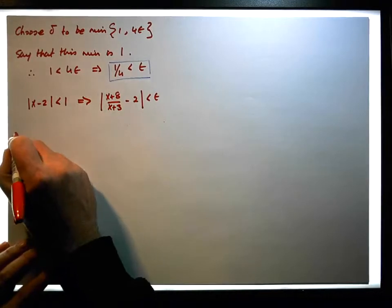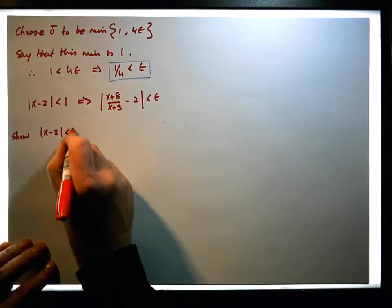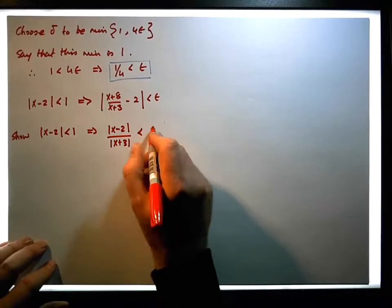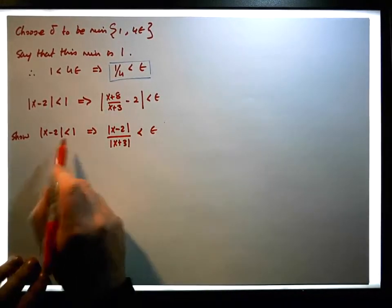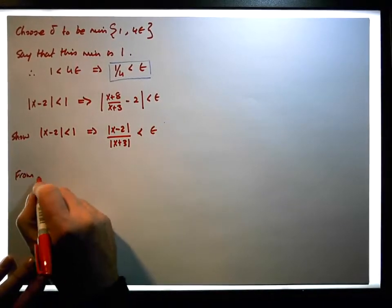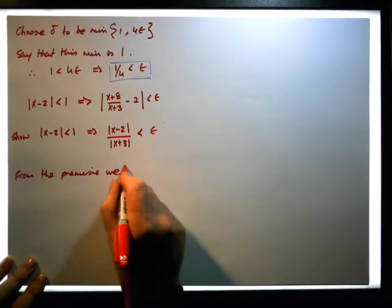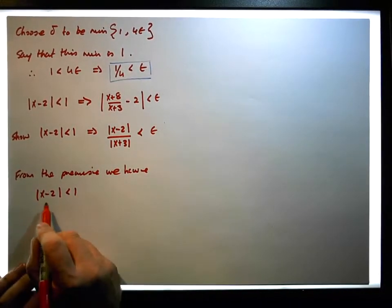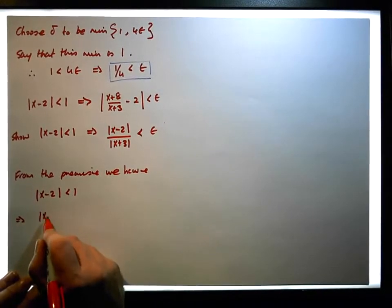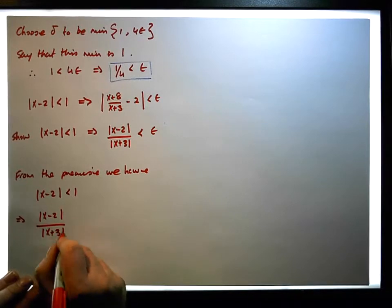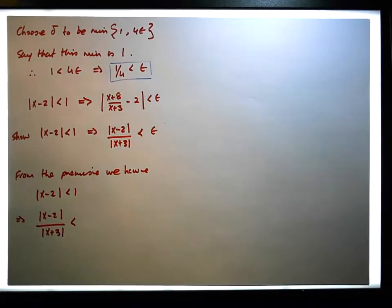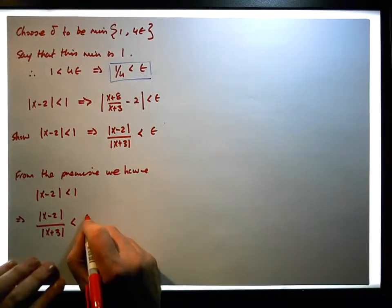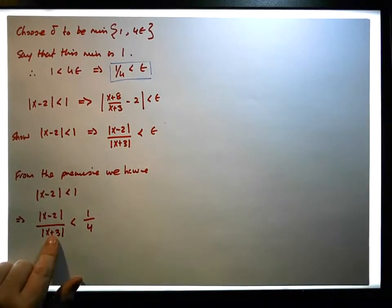So really what we want to show is that the absolute value of x minus two less than one implies that the absolute value of x minus two all over the absolute value of x plus three is less than epsilon. From the premise, we have that the absolute value of x minus two is less than one. This implies that the absolute value of x minus two all over the absolute value of x plus three must be less than one over four, because x plus three is bounded below by four.